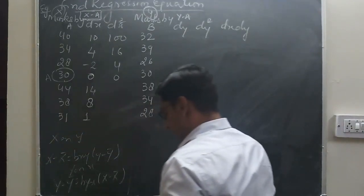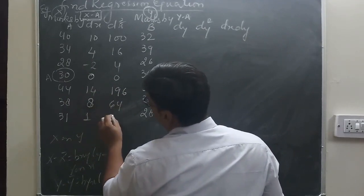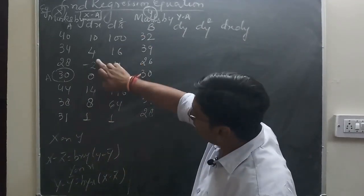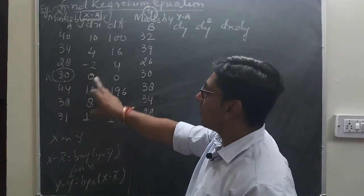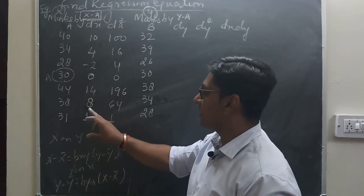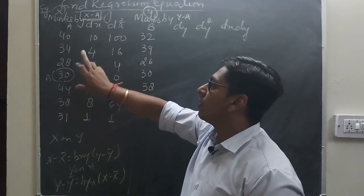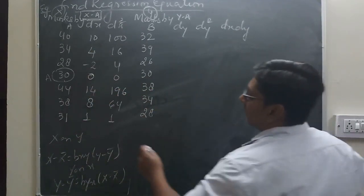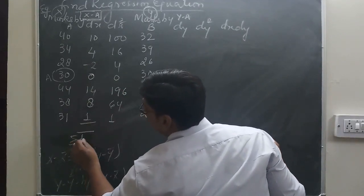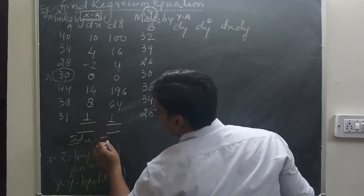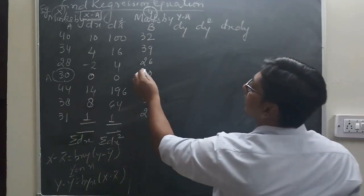dx² values: 10²=100, 4²=16, (−2)²=4, 14²=196, 8²=64, 1²=1. When we total these we get Σdx and Σdx². Similarly for the y-series, taking a = 30: 32−30=2, 39−30=9, 26−30=−4, 30−30=0, 38−30=8, 34−30=4, 28−30=−2.